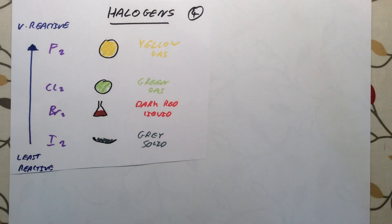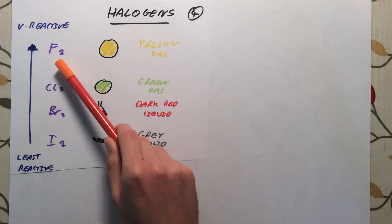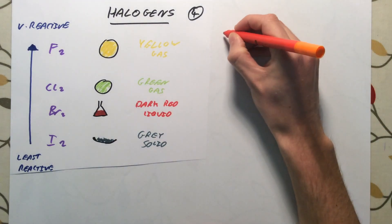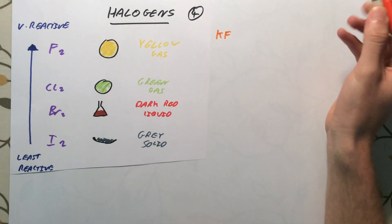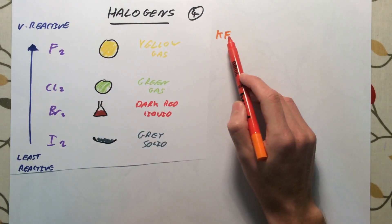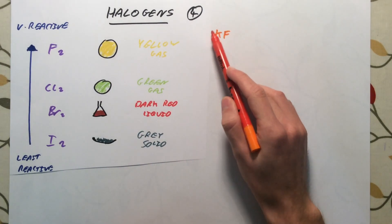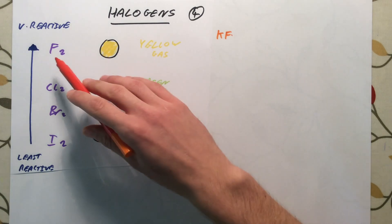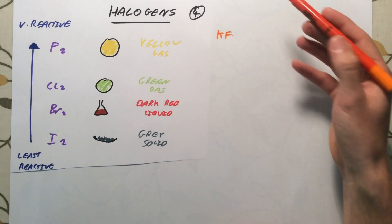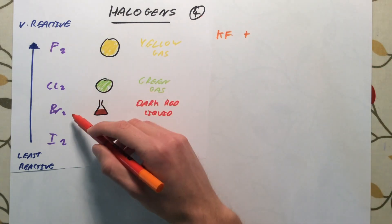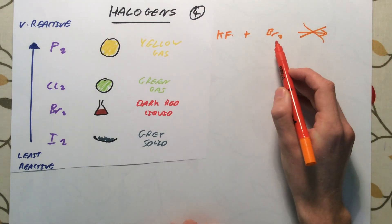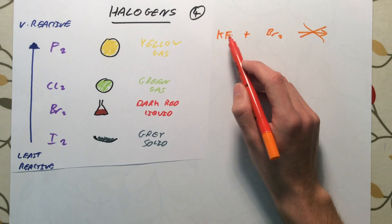Because fluorine is the most reactive halogen, F2 reacts very quickly with anything it contacts, readily forming salts such as potassium fluoride, KF. Once fluorine has formed that salt, the fluoride ion is very stable and doesn't want to return to fluorine gas. Therefore, if you try to react potassium fluoride with a less reactive halogen like bromine, nothing happens — bromine is not reactive enough to displace the fluoride.